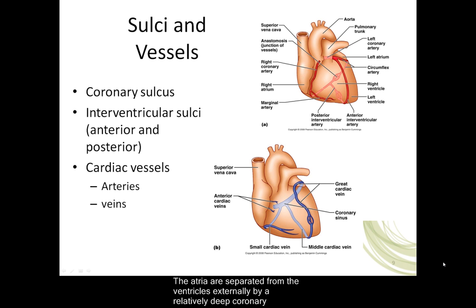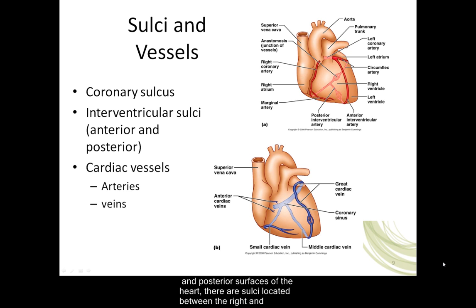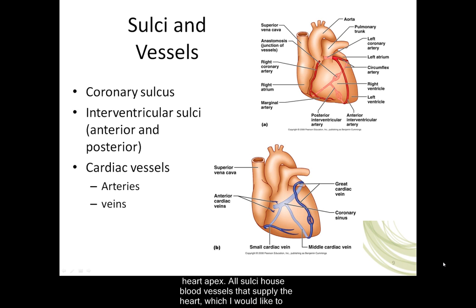The atria are separated from the ventricles externally by a relatively deep coronary sulcus that extends around the circumference of the heart. On both the anterior and posterior surfaces of the heart, there are sulci located between the right and left ventricles. These sulci extend inferiorly from the coronary sulcus toward the heart apex. All sulci house blood vessels that supply the heart.